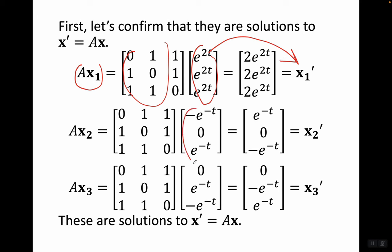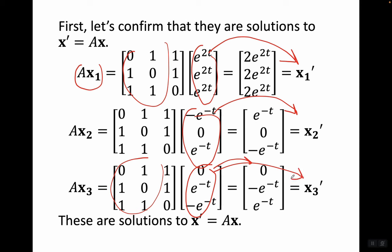Computing Ax2 gives (e^{-t}, 0, -e^{-t}), which is x2'. Computing Ax3 gives (0, -e^{-t}, e^{-t}), which is x3'. So all three vectors are indeed solutions to x' = Ax.